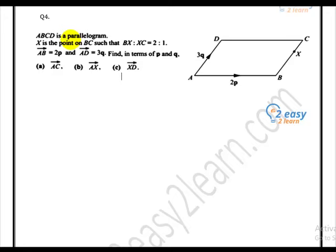ABCD is a parallelogram. Very important information. In previous question we also discussed the parallelogram. Opposite sides are equal and parallel. So we first shift the information. DC is equal to AB, so DC becomes 2P. Similarly, AD is equal to 3Q. So AD is equal to BC also because opposite sides are equal and parallel. So BC is equal to 3Q.